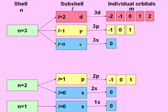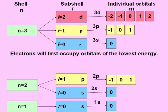Another rule is that electrons will first occupy orbitals of lowest energy. Since these individual orbitals are contained within subshells, we can compare the energy of the subshells. The energy of the subshells can be compared by comparing their n plus l values. The lower the n plus l value, the lower the energy of the subshell.